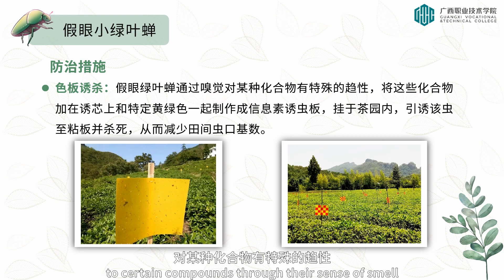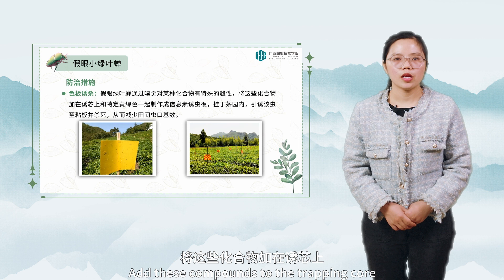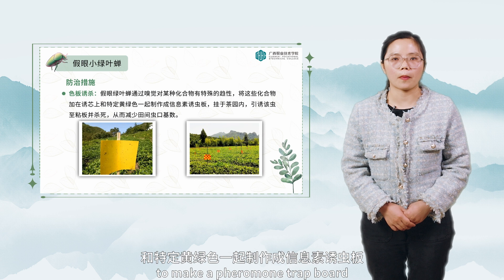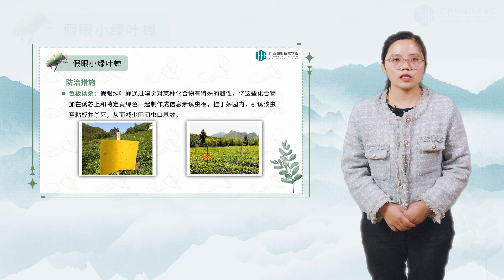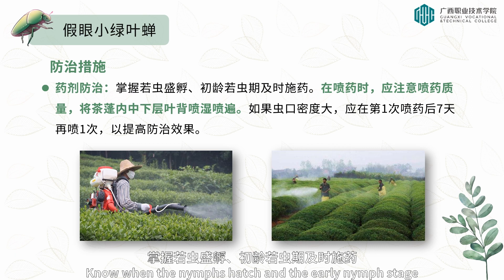Third, color plate trapping: Empoasca vitis has a special tendency toward certain compounds through their sense of smell. Adding these compounds to a trapping core together with a specific yellow-green color makes a pheromone trap board. Hanging these in the tea garden lures the insects to the sticky plate and kills them, reducing the number in the field.